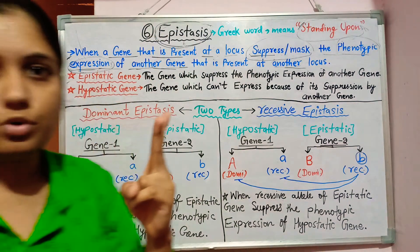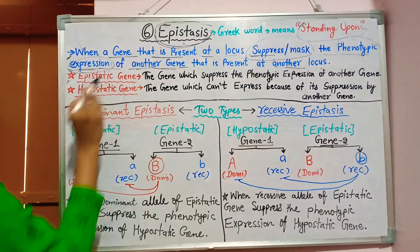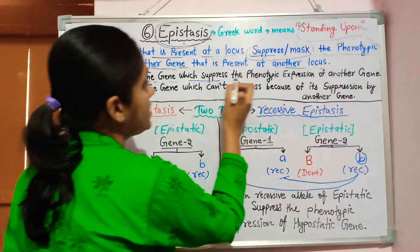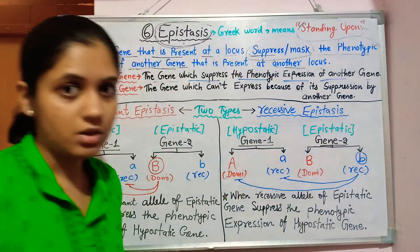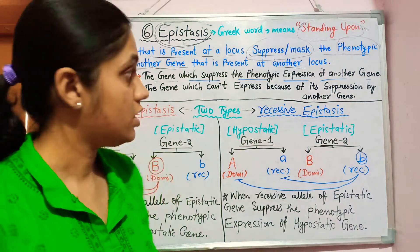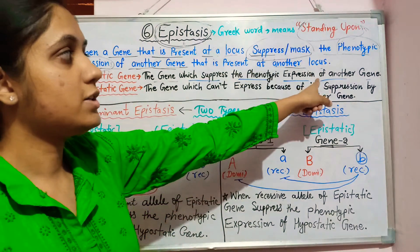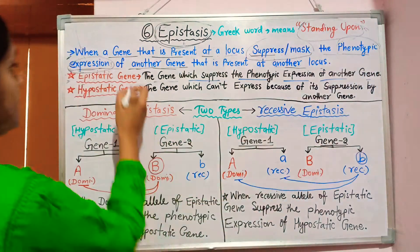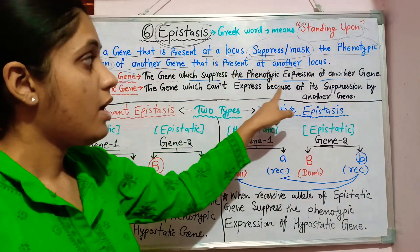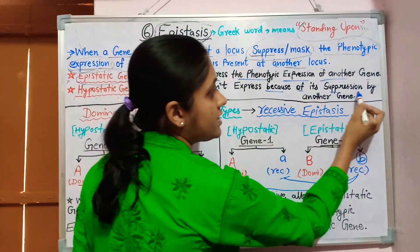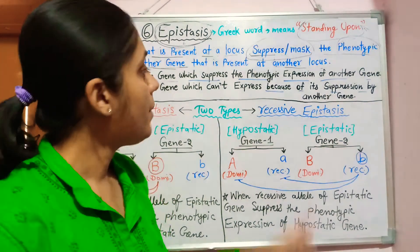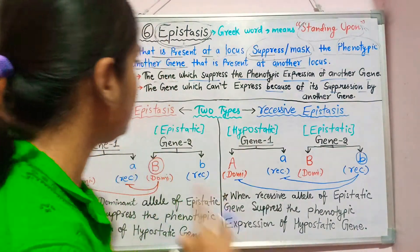In epistasis, two terms are most important. First is the epistatic gene — the gene which suppresses the phenotypic expression of another gene. Second is the hypostatic gene — the gene which is suppressed by the epistatic gene.